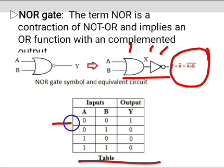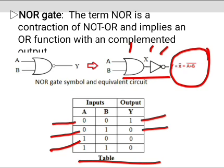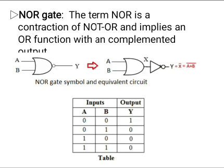Observe the table. When both inputs are low, the output becomes high. When A equals 1 and B is high, the output Y equals low. When A is high and B is low, the output Y becomes low. When both inputs A and B are high, the output Y becomes low. In general, for an N-input NOR gate, the output is low if any one of the inputs is high.